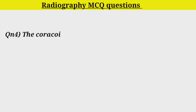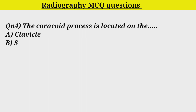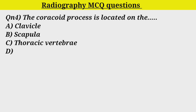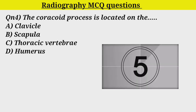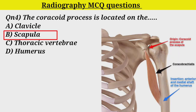Q4. The coracoid process is located on: Option A. Clavicle. Option B. Scapula. Option C. Thoracic vertebra. Option D. Humerus. Correct answer is Option B. Scapula.